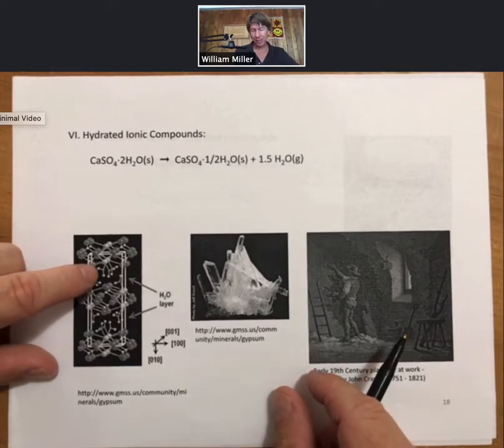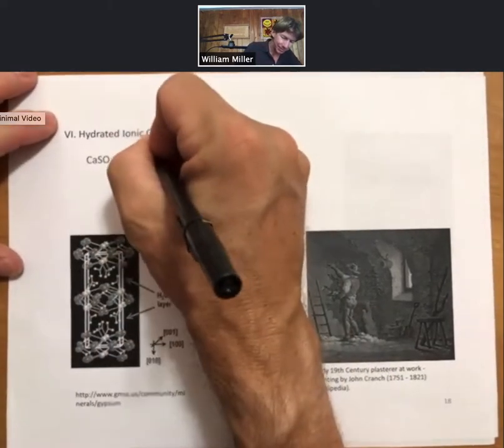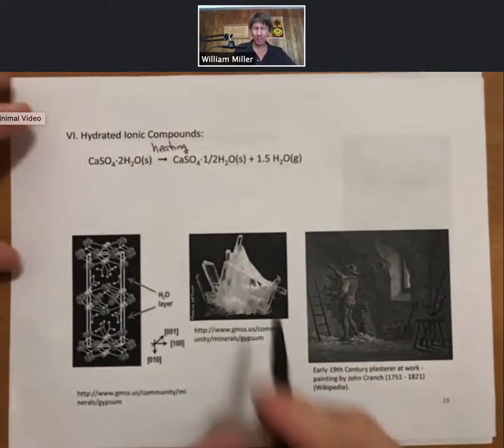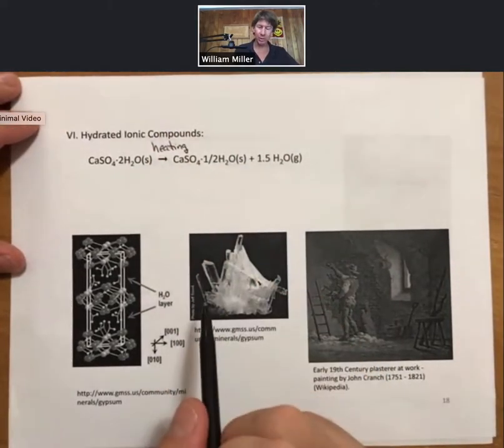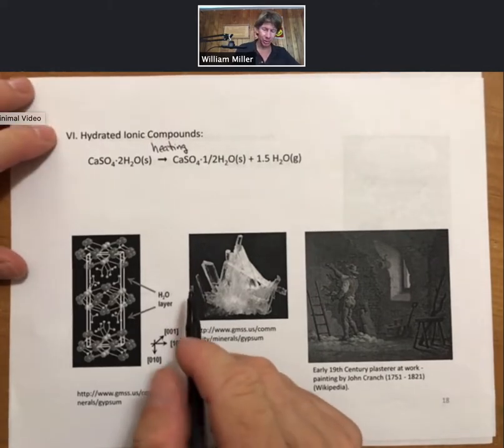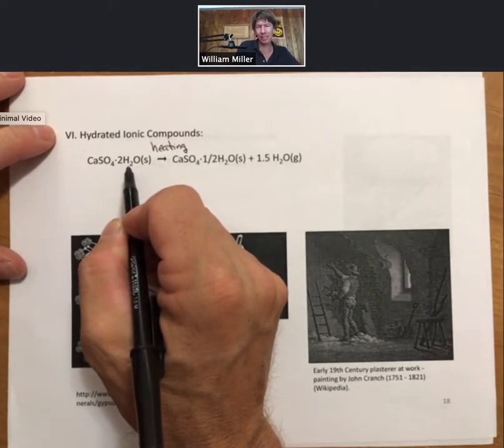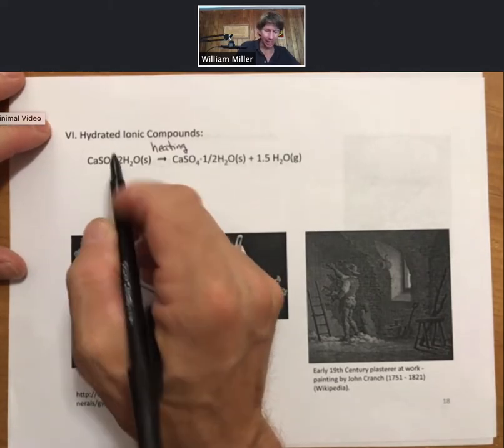Of course, we can get them to leave by heating. And depending upon how much heat we apply, you can get some or all of the waters to leave. These are called waters of hydration, and the name of this is going to be calcium sulfate dihydrate.